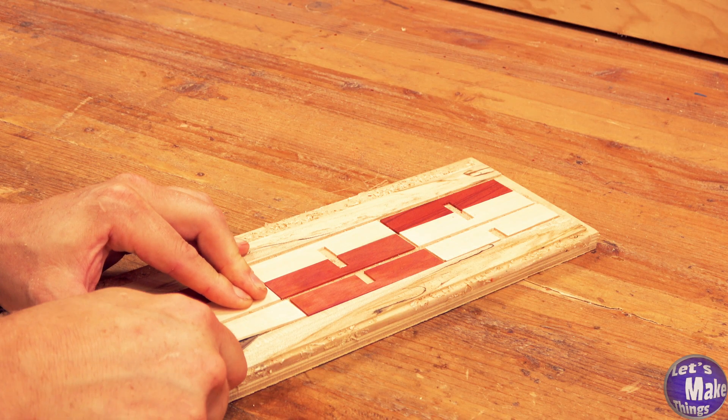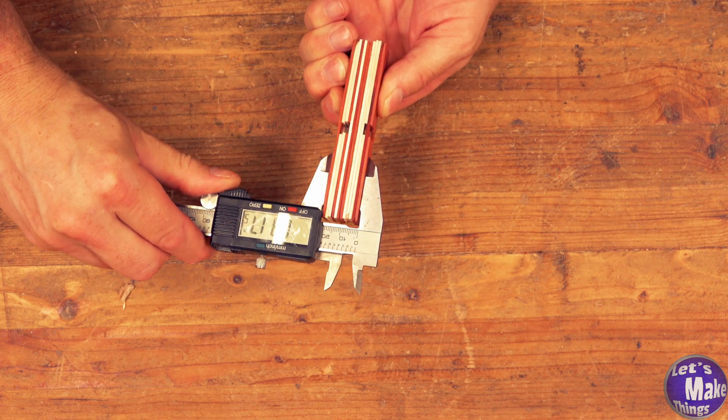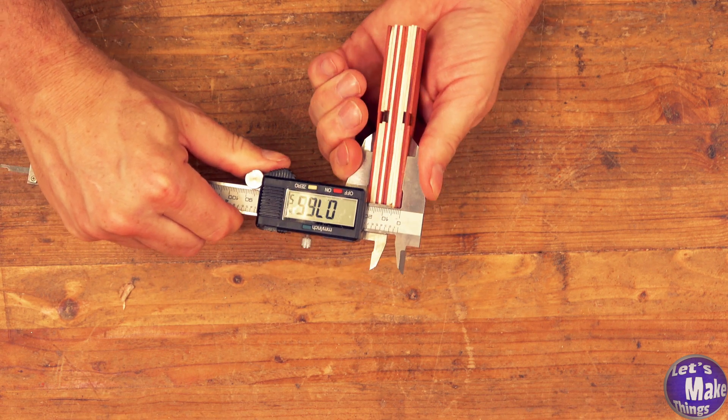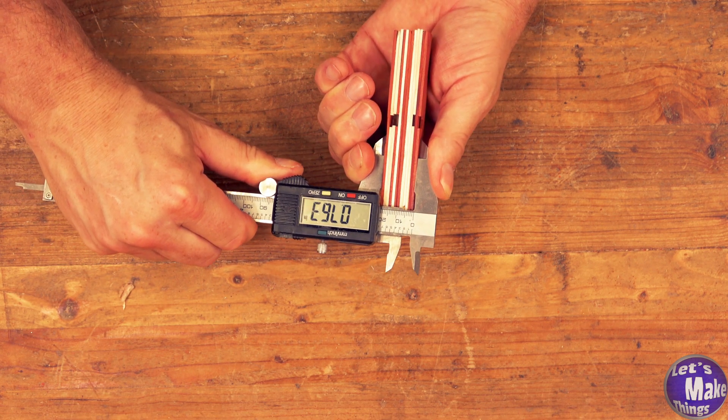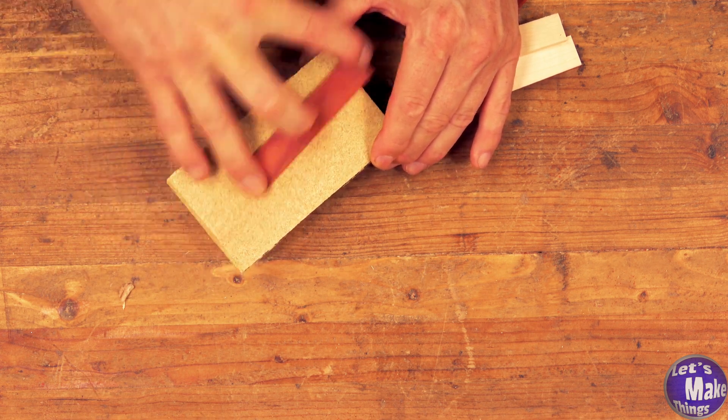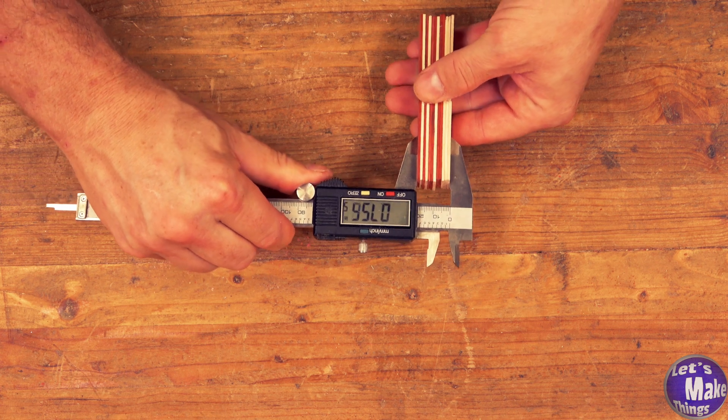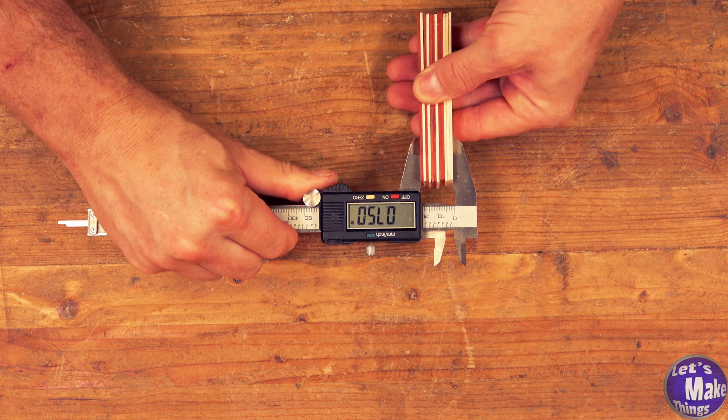I found that if I use one of these really thin rulers then I have a much better chance of getting these things out. We'll go ahead and check this now: 0.763. I need to be at 0.75. So I'm going to take a sanding block and I'm just going to do a little bit on each side. Now we'll check it again and that's perfect.